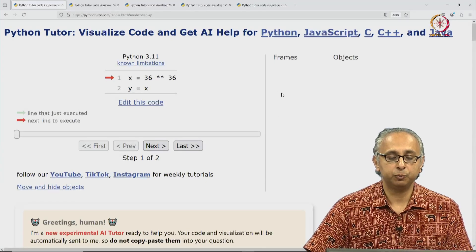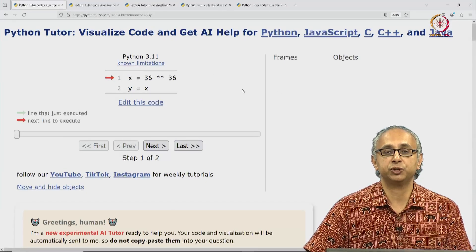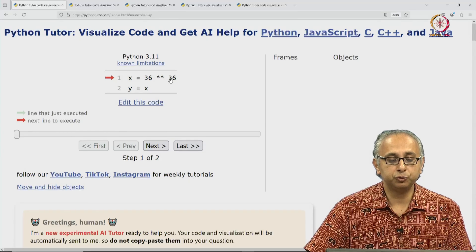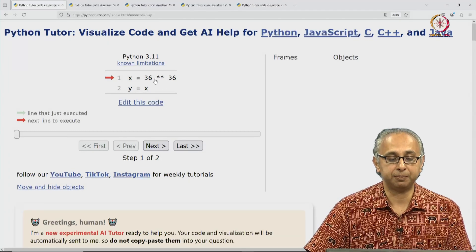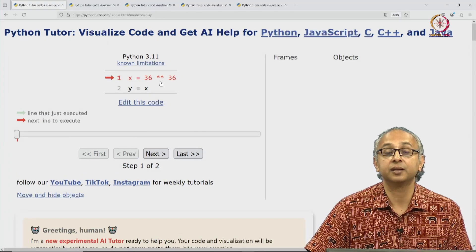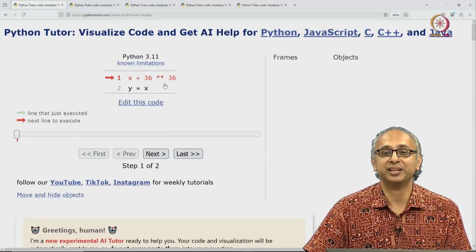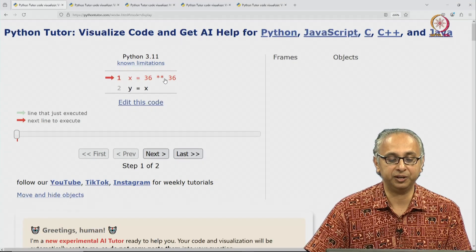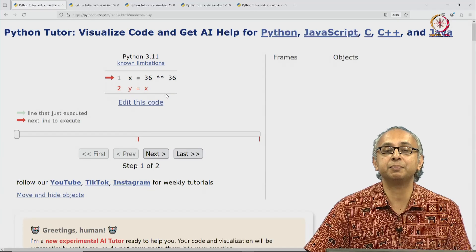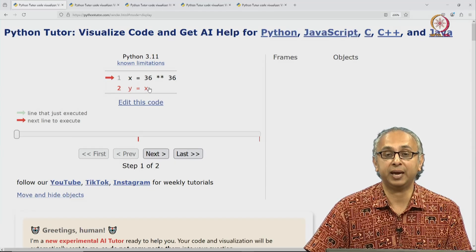The first Python Tutor link will take you to this visualization. It shows you these two assignment statements. The first one is x is 36 raised to the power 36. As you can imagine, that's a very large value. And then we have this simple assignment statement y is equal to x.